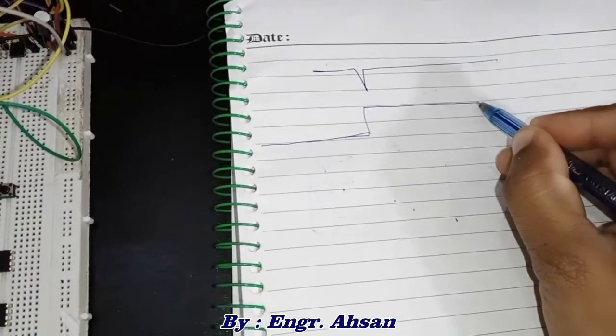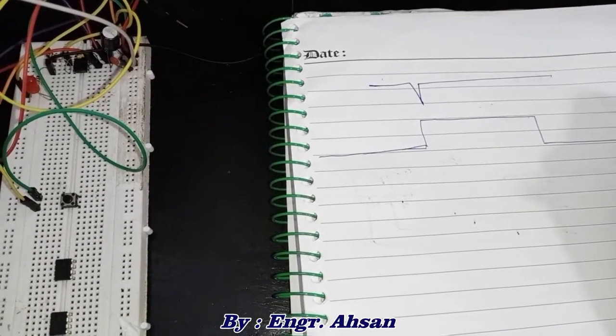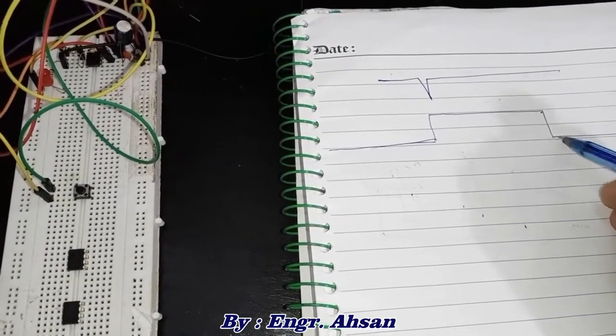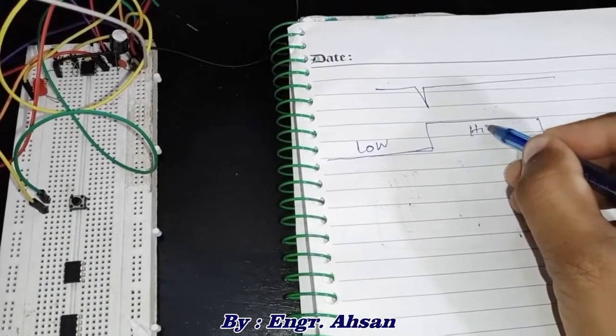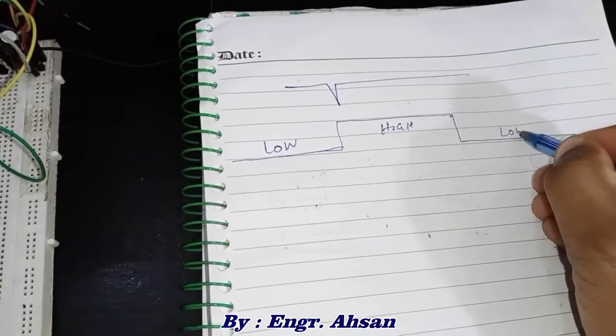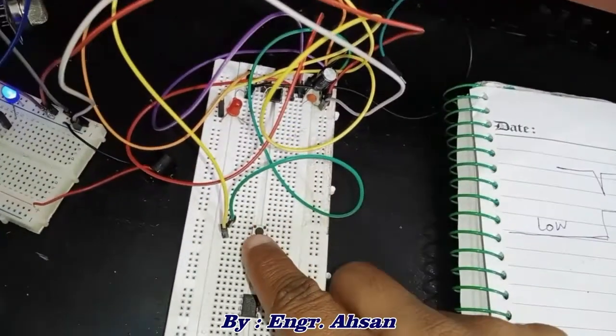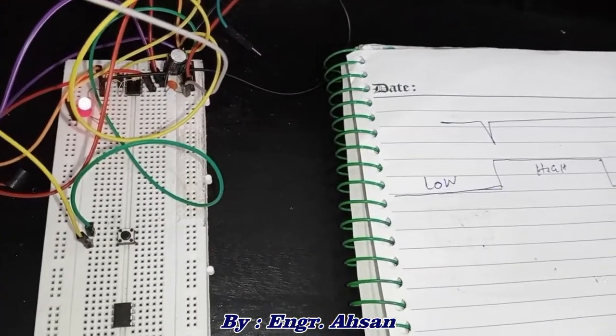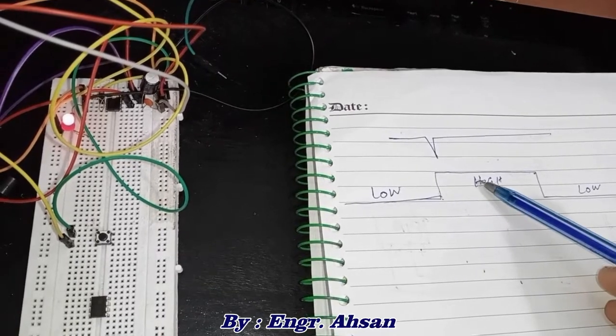It remains high for a particular amount of time that you can set by yourself, then goes to low again. So it was low before, became high, and then became low again. As you can see here, I am giving the negatively triggered pulse, and the output became high like this.